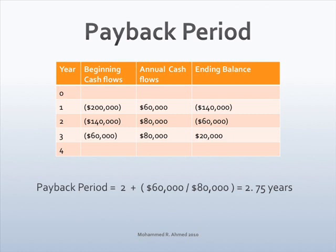At the end of the third year, the company will receive $80,000, which is greater than the outstanding balance. Stop here and determine what part of the third year the company will recover $60,000. Divide $60,000 by $80,000 to determine what part of the year $60,000 will be recovered. Total time to recovery is 2 years plus 0.75, which is 2.75 years.